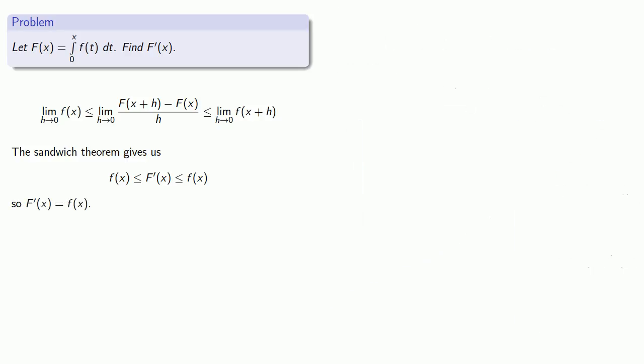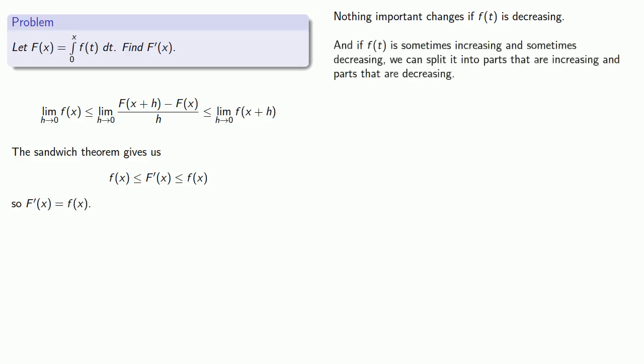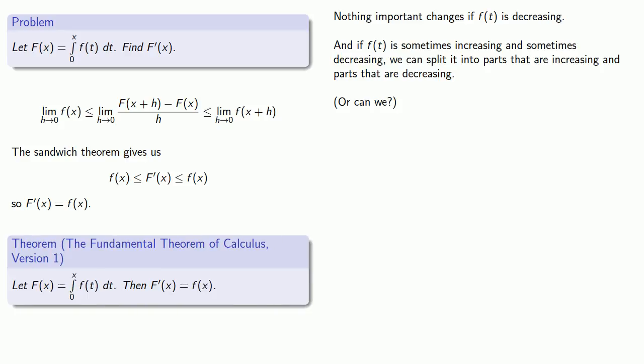What's important to recognize is nothing important changes if f of t is decreasing and if f of t is sometimes increasing and sometimes decreasing we can split it up into parts that are increasing and parts that are decreasing. Or can we? Again that's a topic for a later course. This gives us the following important result. Provided certain conditions are met, let capital F of x be the integral from 0 to x of some function. Then the derivative of capital F of x is going to be the same as the integrand f of x.